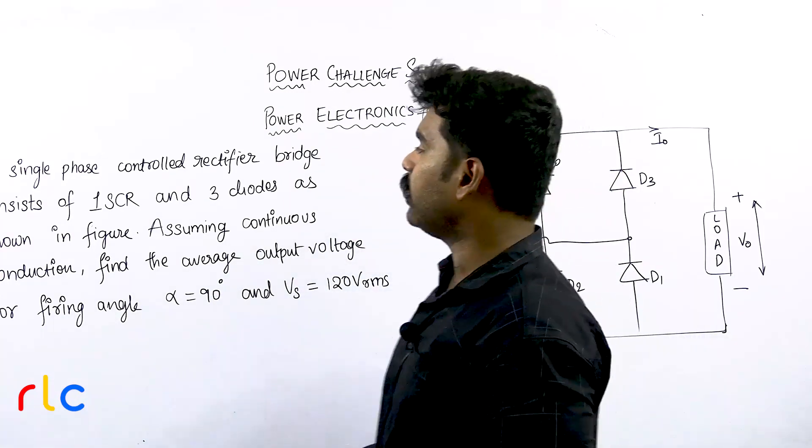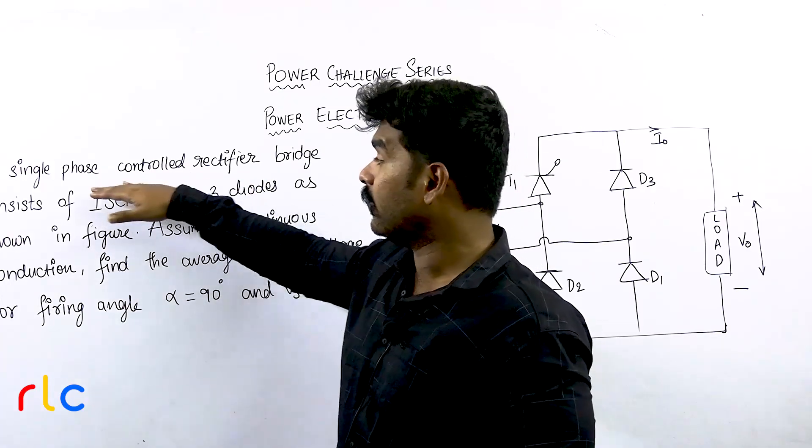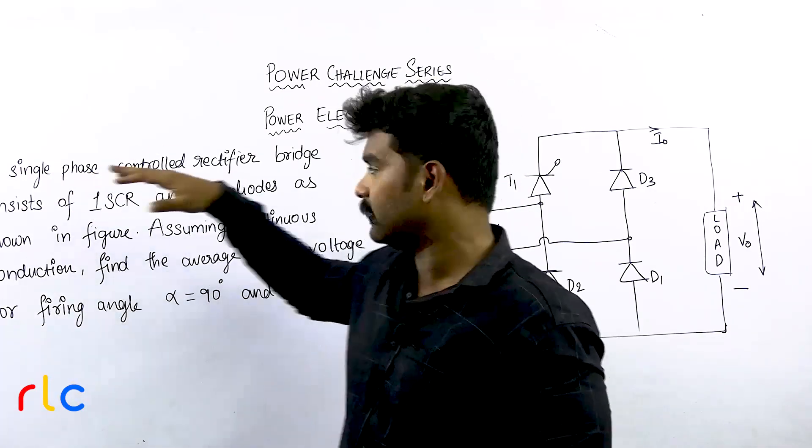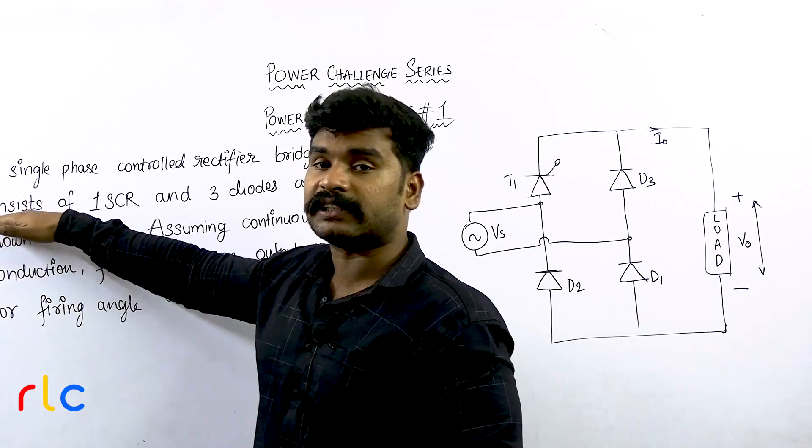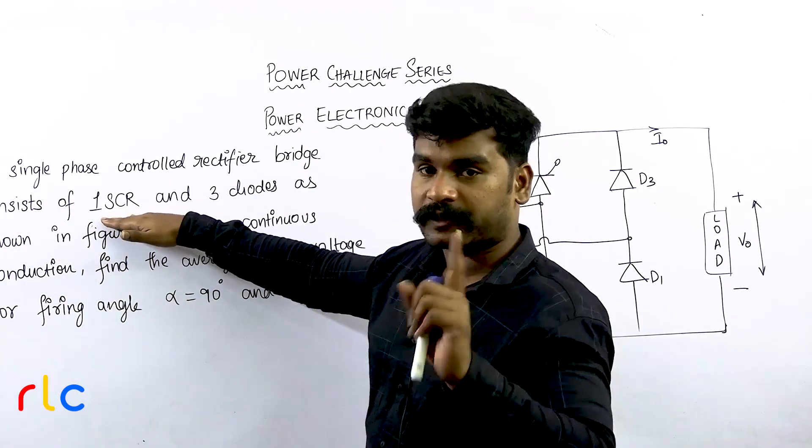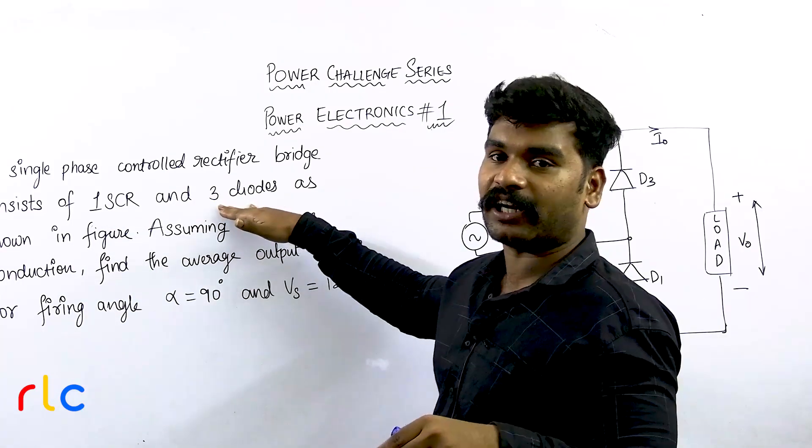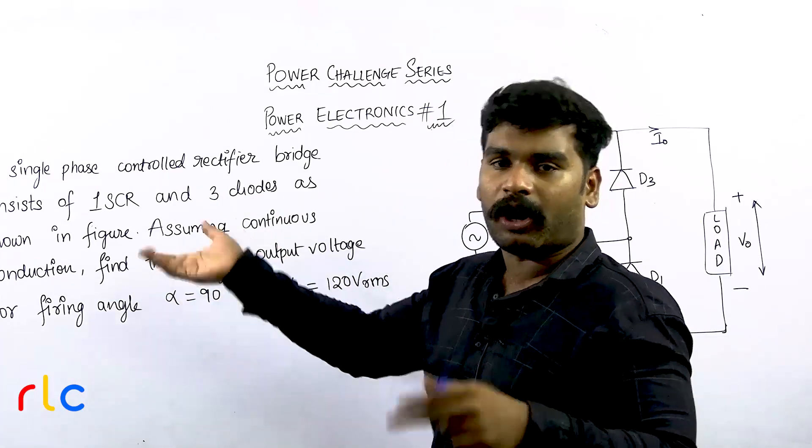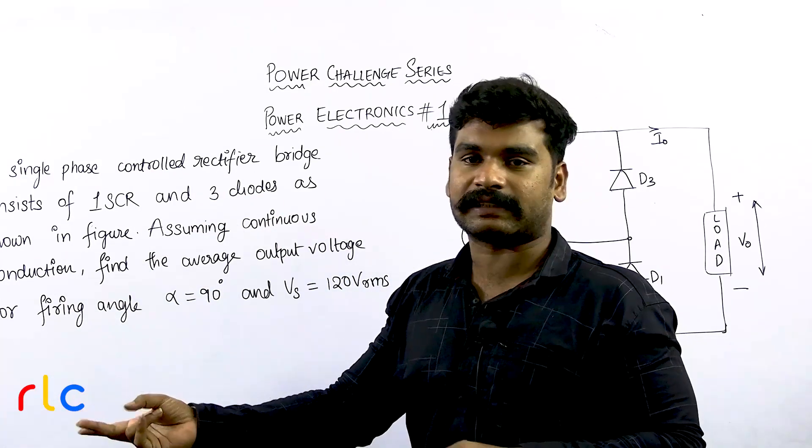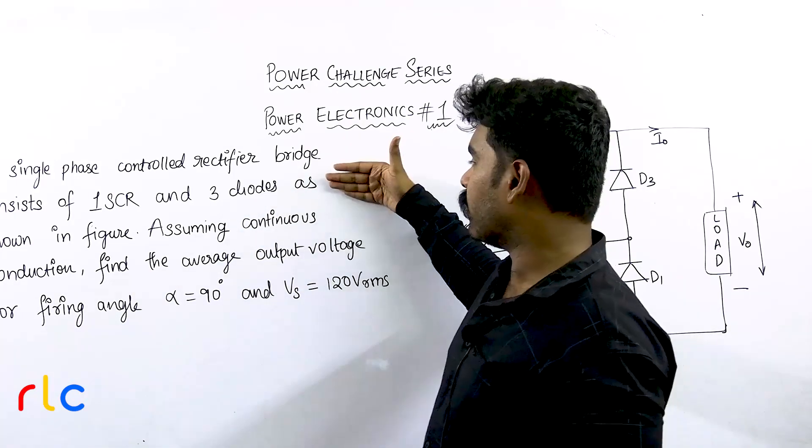The question says that a single-phase controlled rectifier bridge consists of what switches? One SCR and three diodes. So this is a different case. Generally you see all four are SCRs or all four are diodes, or any two diodes and two SCRs which is called a semi-converter. But this is a different case.